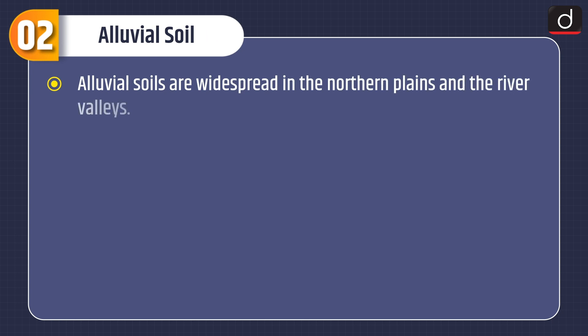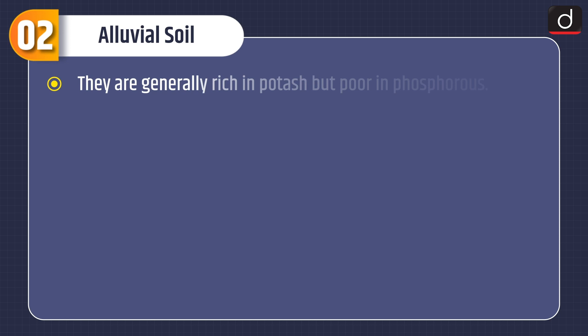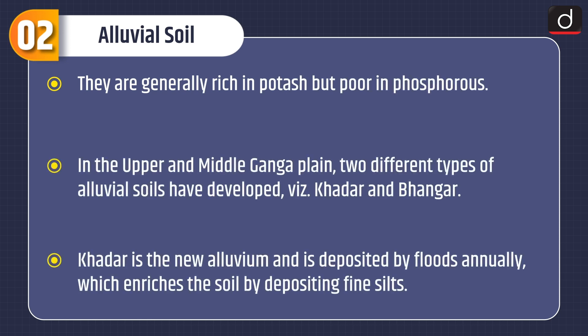Now let's discuss about alluvial soil. Alluvial soils are widespread in the northern plains and the river valleys. These soils cover about 40% of the total area of the country. They are depositional soils transported and deposited by rivers and streams. They are generally rich in potash but poor in phosphorus. In the upper and middle Ganga plain, two different types of alluvial soils have developed: Khadar and Bhangar.